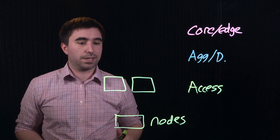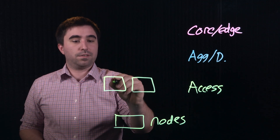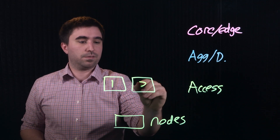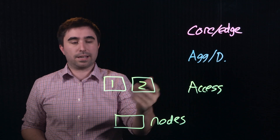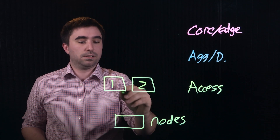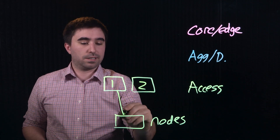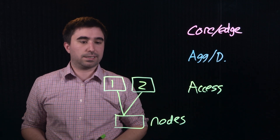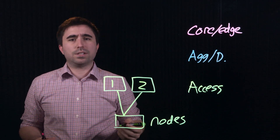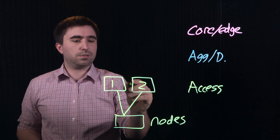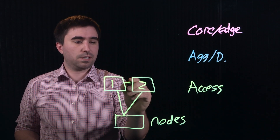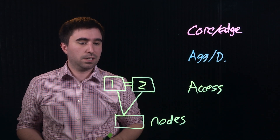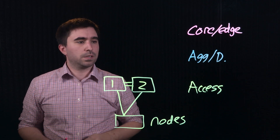We'll talk about those in a later video. For now, in this diagram, we've got two access switches — access one and access two. These are redundantly connected to the Nutanix node like this. They're almost always connected to each other with some sort of interconnection mechanism, which we can talk about in a later video.